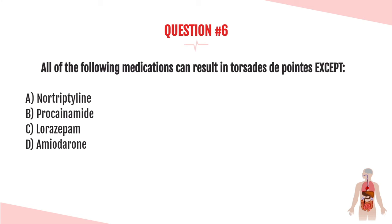Question number six. All of the following medications can result in torsades de pointes EXCEPT: A, nortriptyline; B, procainamide; C, lorazepam; or D, amiodarone? The answer is C, lorazepam. All of the medications except Ativan prolong the QT interval, and prolonged QT intervals can result in torsades de pointes.